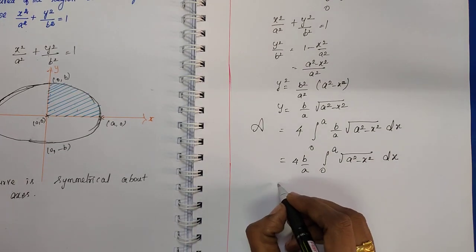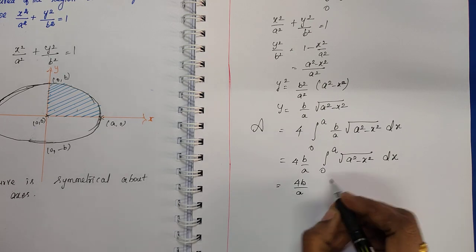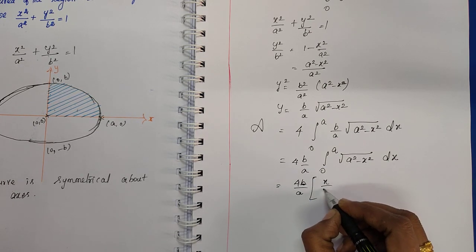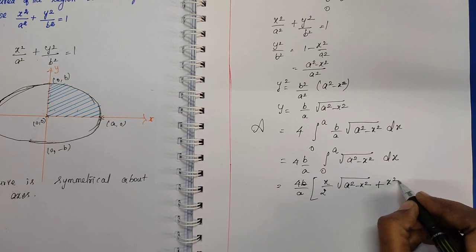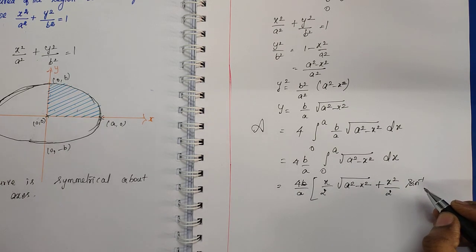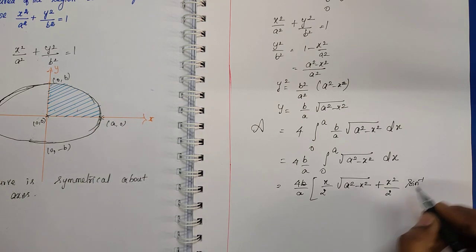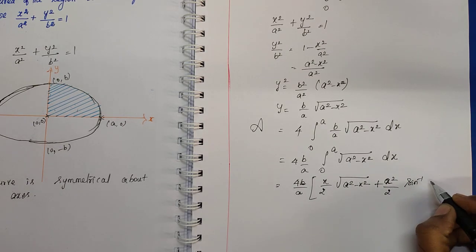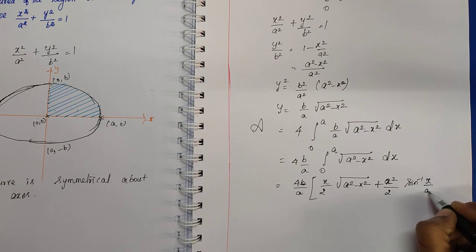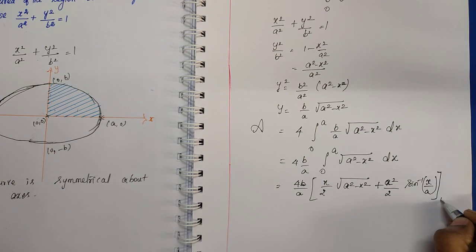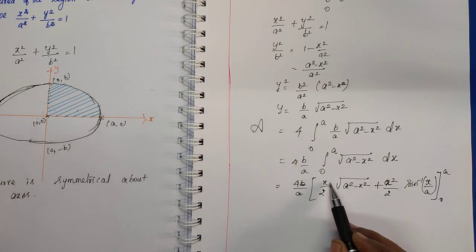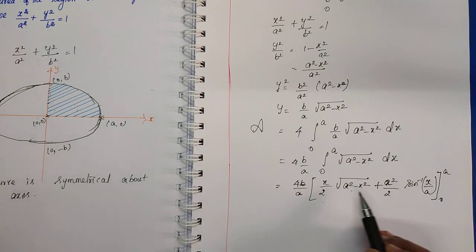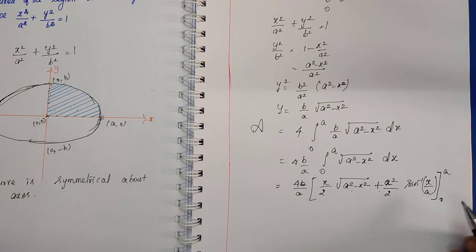Applying the standard integral formula, we get: 4(b/a) × [x/2 × √(a² − x²) + a²/2 × sin⁻¹(x/a)] evaluated from 0 to a. The formula for ∫√(a² − x²) dx is x/2 × √(a² − x²) + a²/2 × sin⁻¹(x/a), with the limit from 0 to a.